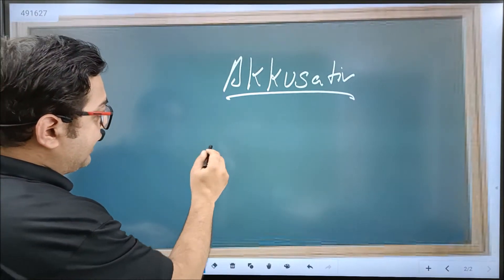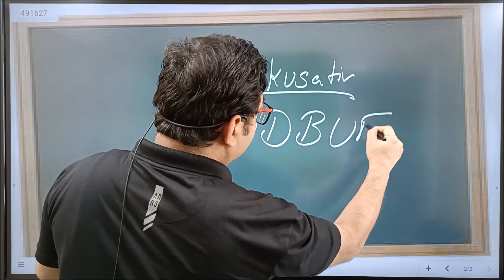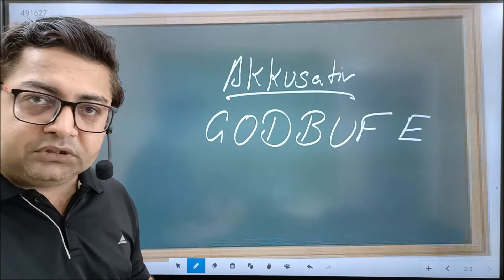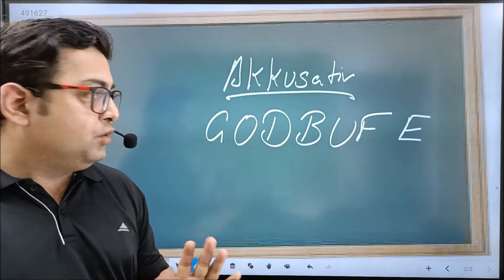There is an acronym you can learn as GOD BUFFET. Ideally there are eight prepositions, but we learn seven because there is one, wider, which is not generally used, and gegen is used instead of wider nowadays.